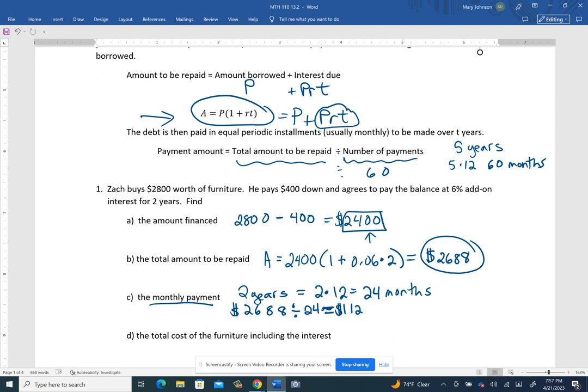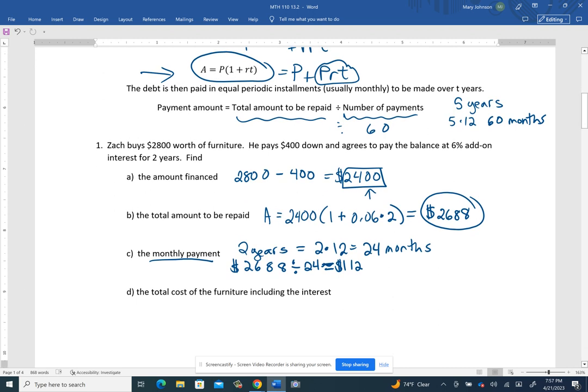Now, one final question that comes up is what's the total cost of the furniture, including the interest? There's two ways you can think about that. The furniture was $2,800.